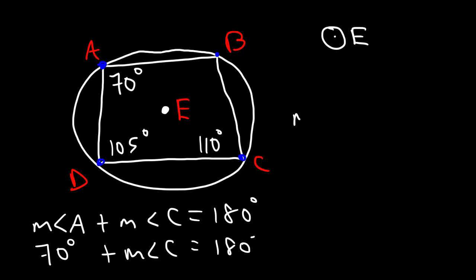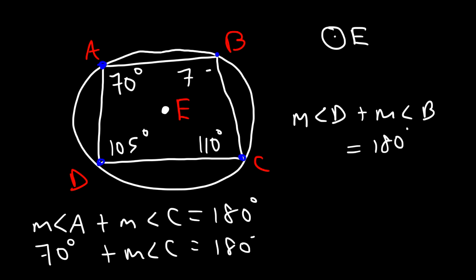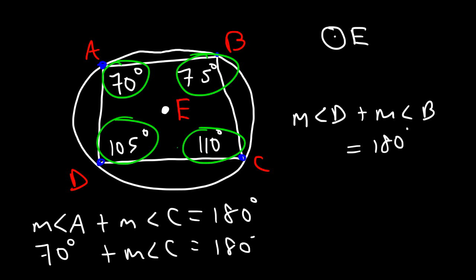Angle D and angle B must also add to 180, so angle B is 180 minus 105, which is 75. And the four angles of a quadrilateral must add to 360 — so 70 plus 75 plus 105 plus 110 equals 360, which confirms our answers.